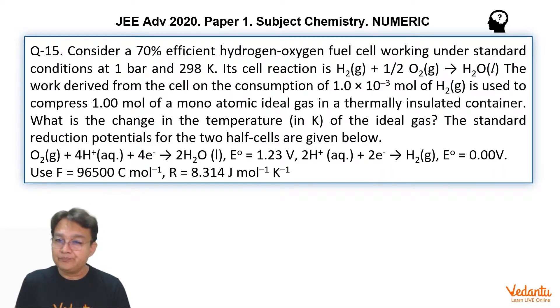So we have to find the change in temperature of the ideal gas. The given data is standard reduction potential of the 2 half cells are given in which O2 plus 4H+ plus 4 electron changing into 2H2O. For this process E° is 1.23 and for 2H+ plus 2 electron changing into H2, E° is equals to 0. Use F equals 96500 and R equals 8.314.